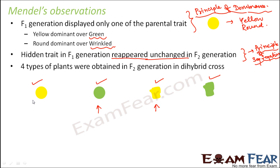These new combinations appeared because each trait — whether seed shape or seed color — was independent of the other. During gamete formation they segregated independently, just as tall and dwarf segregated in a monohybrid cross. Round versus wrinkled and green versus yellow both segregated independently, meaning seed shape is not dependent on seed color. This is where Mendel came up with another important principle, which we will discuss a little later.